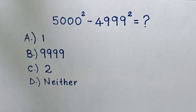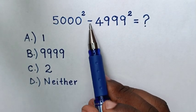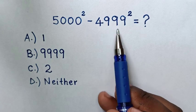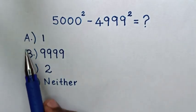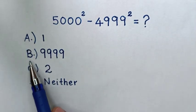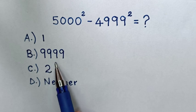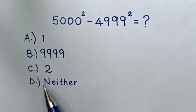Hello. How to solve 5000 square minus 4999 square. Select between the answer: a) 1, b) 9999, c) 2, d) neither.